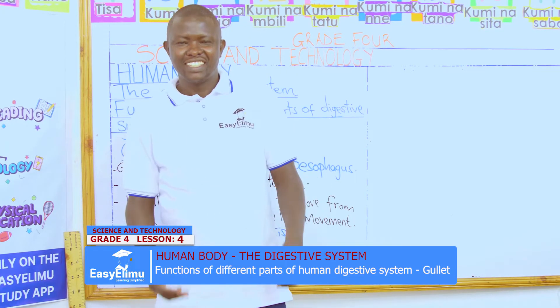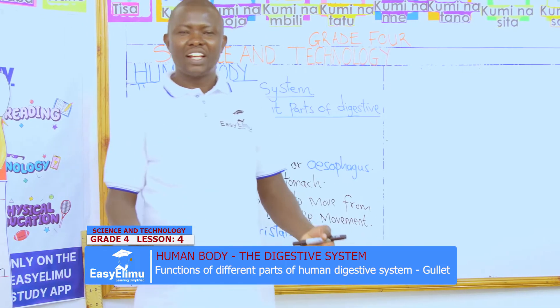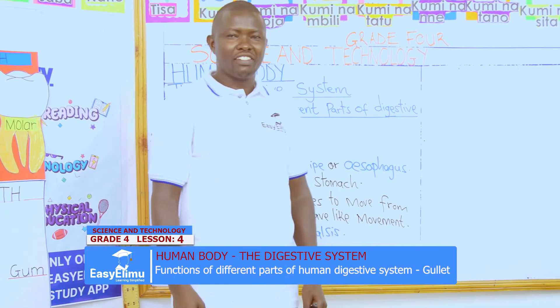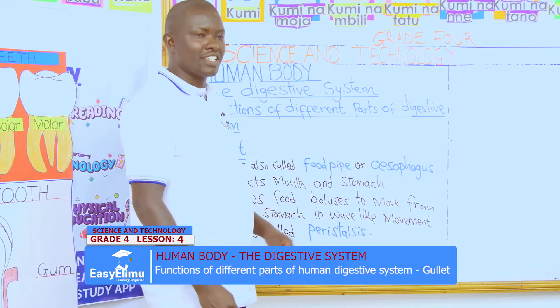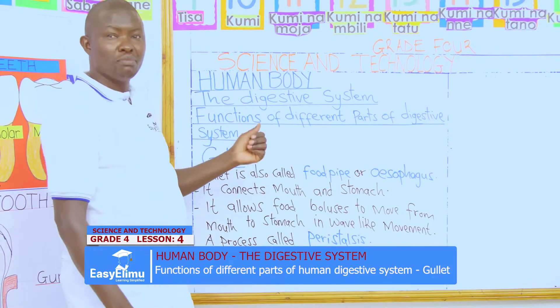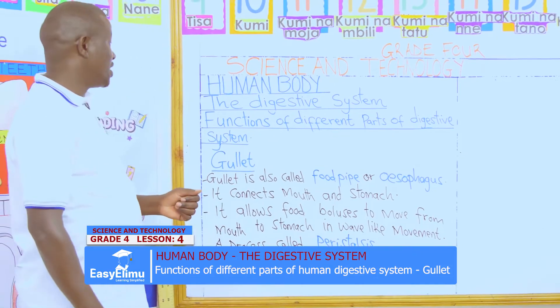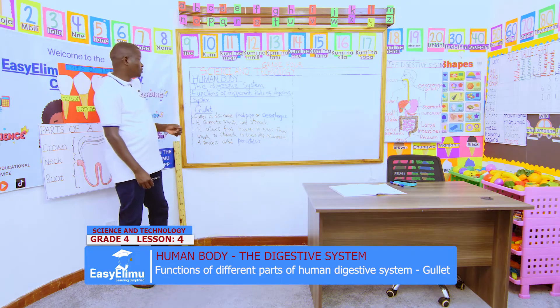Hello my learner, this is teacher Jonathan. Welcome to Easy Elimu Learning Simplified. Our grade 4 science and technology on human body, and our today's lesson is on the digestive system.